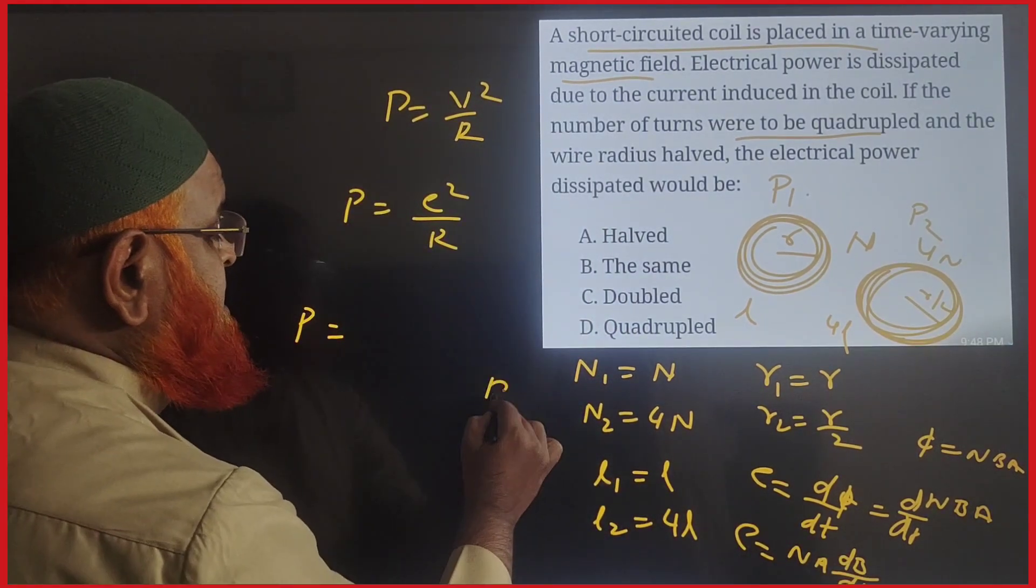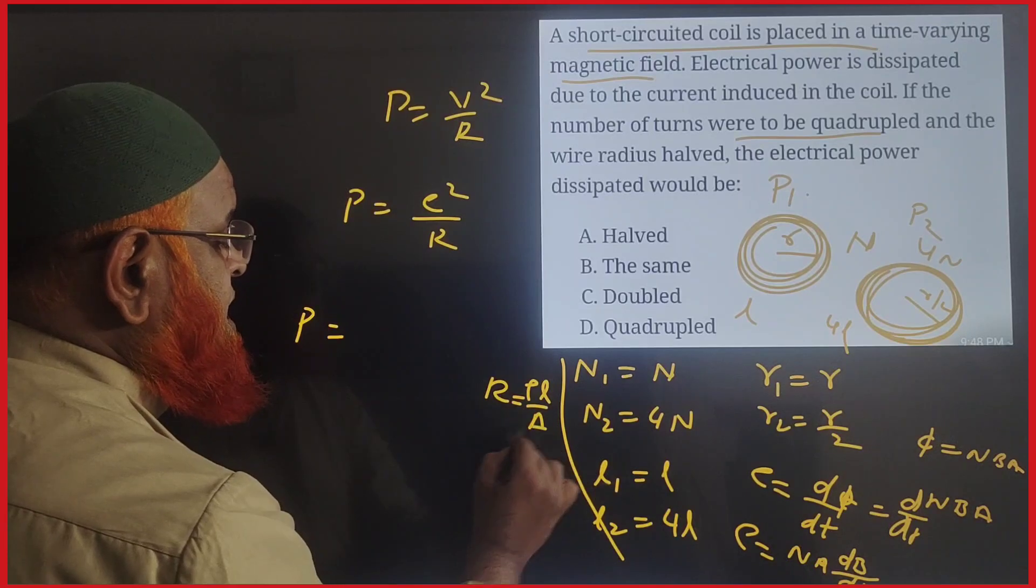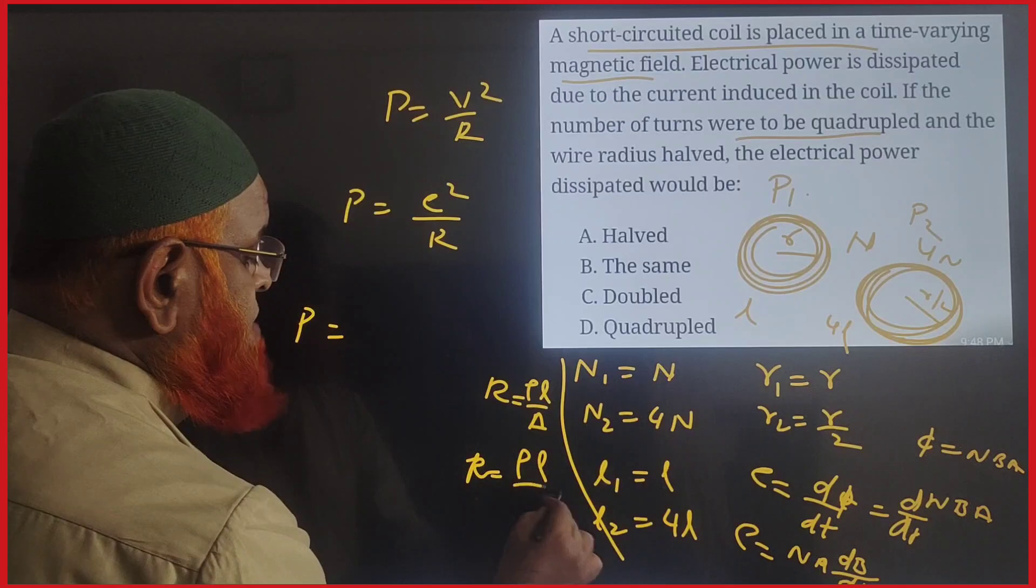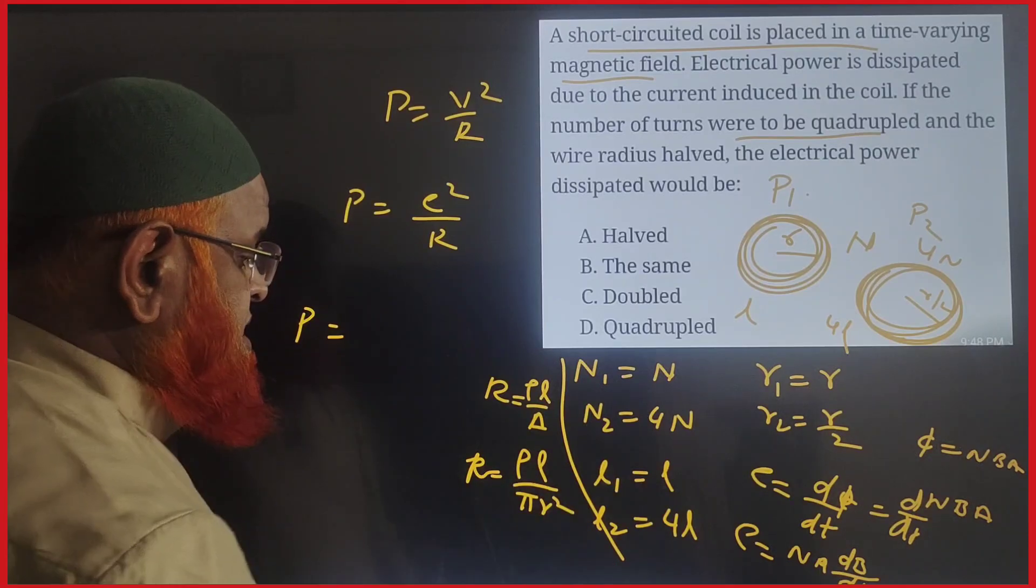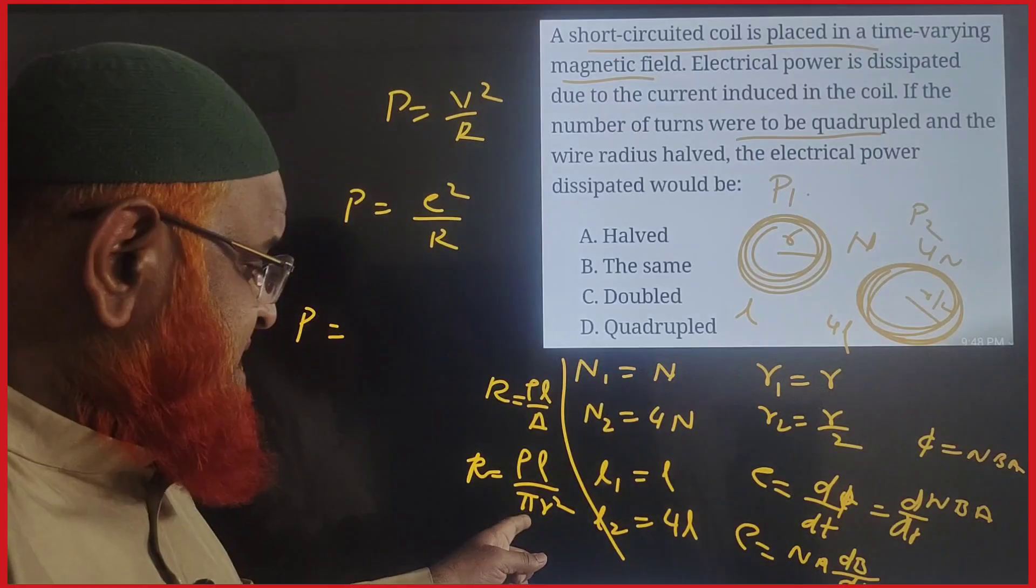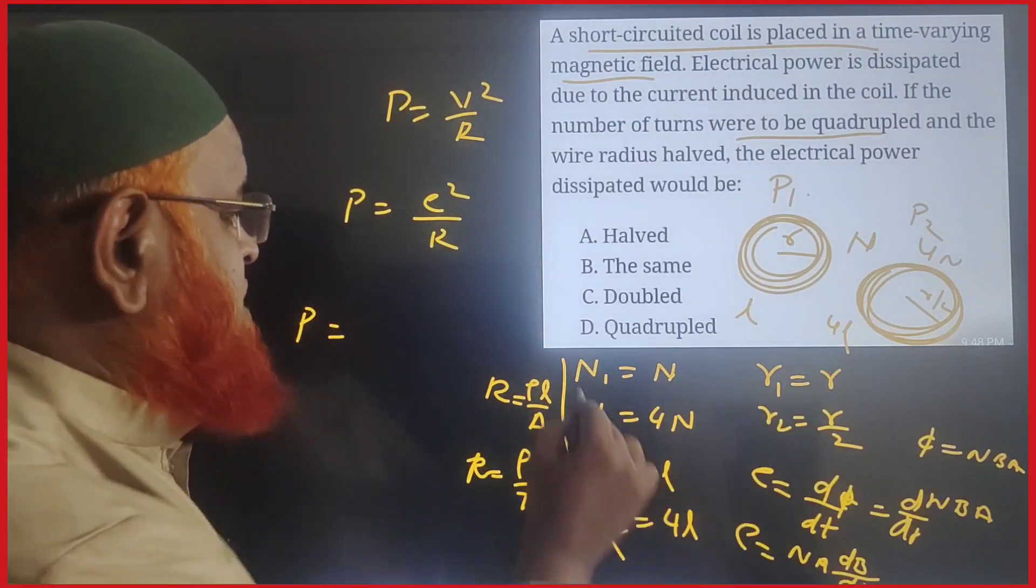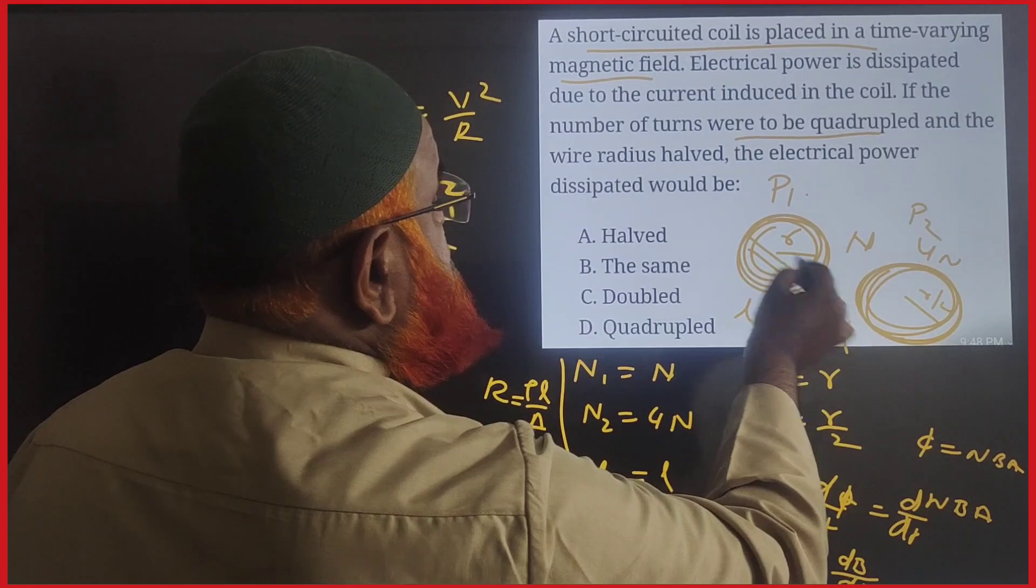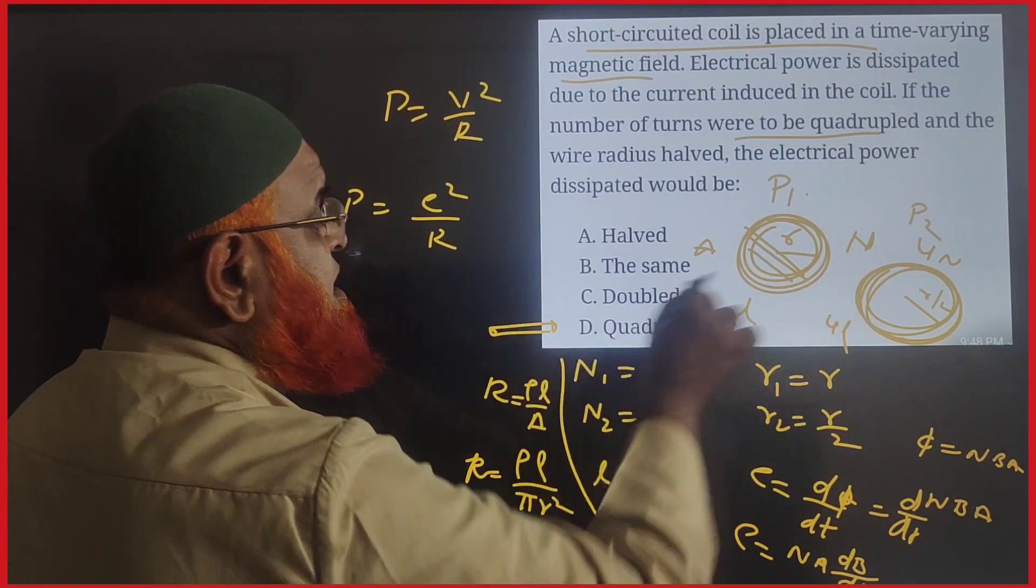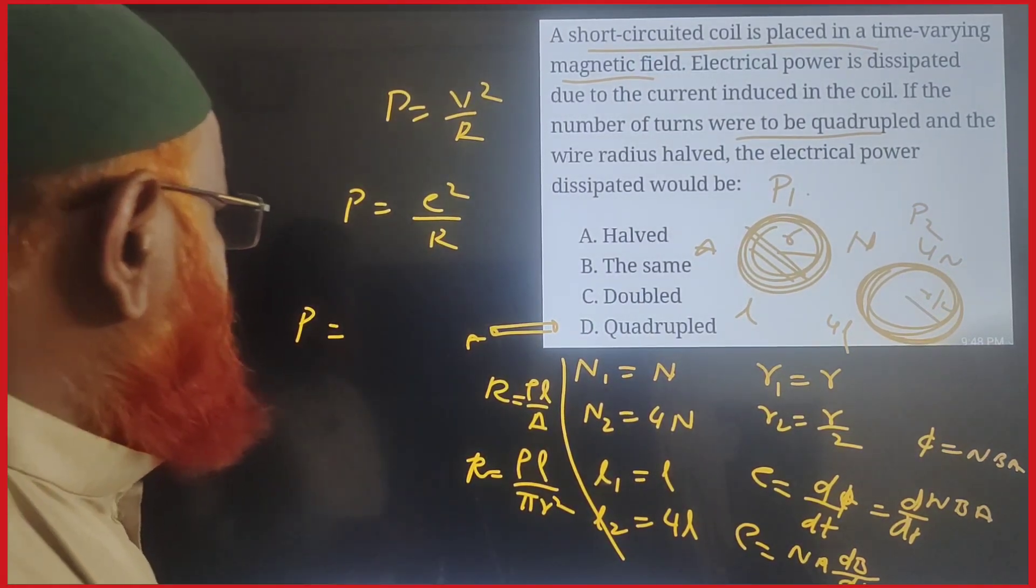You should also know that resistance is ρl/A, that means resistance R = ρl/(πr²). Instead of area we write πr². But this area is different from the area of the coil. Here, area of the coil means you should consider the coil area, whereas here the area of cross-section of the wire is different.